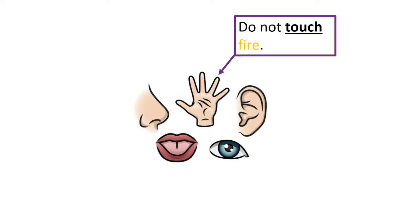So, for example, do not touch fire. Fire is a noun because you can touch it. I can hear noise. Noise is also a noun because you can hear it.